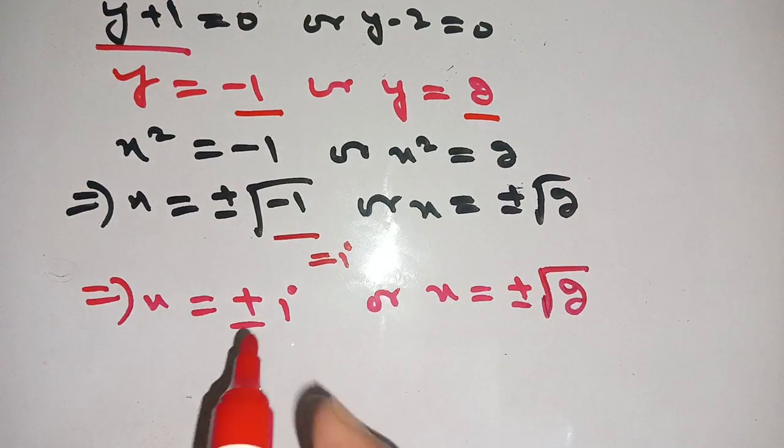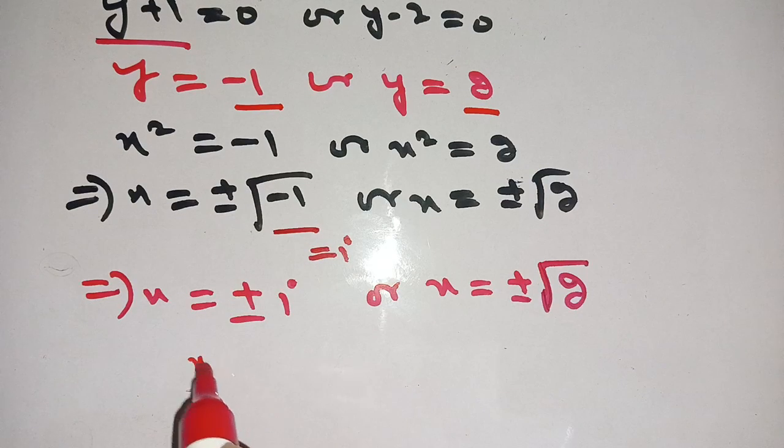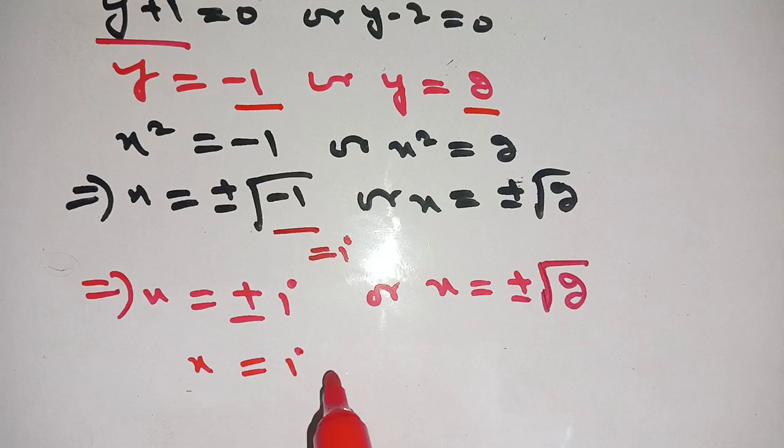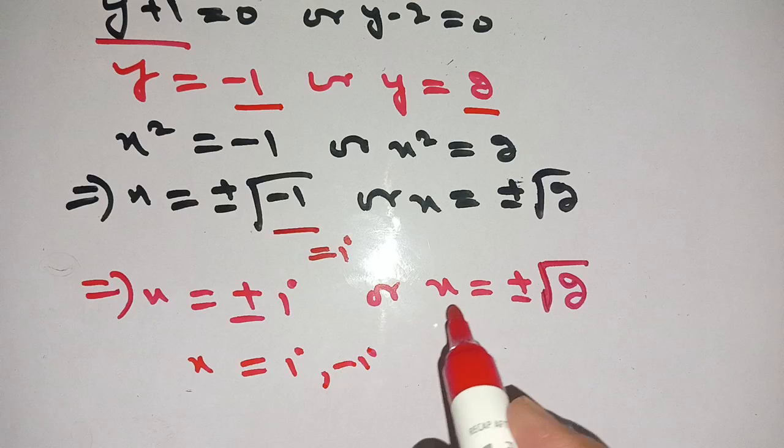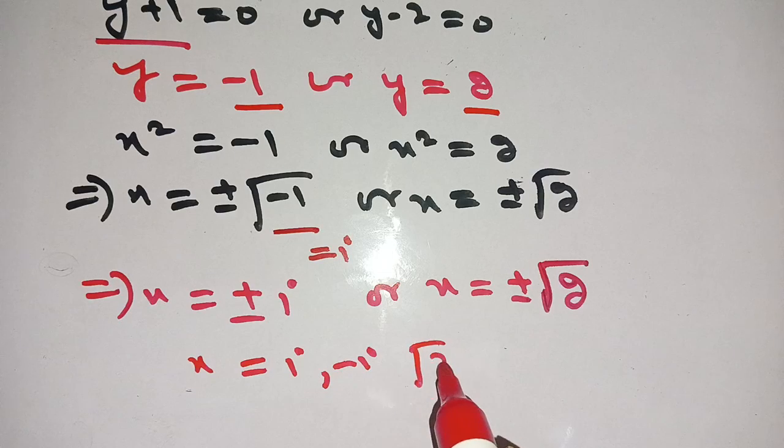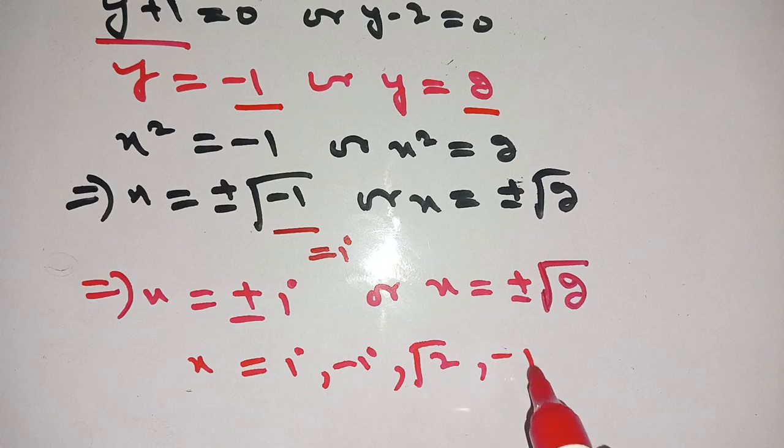Thus, there are four values. First value is iota, second value is minus iota, third value is square root 2, and fourth value is minus square root 2.